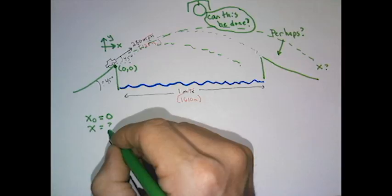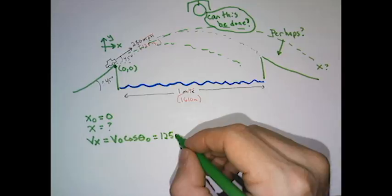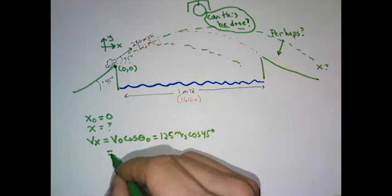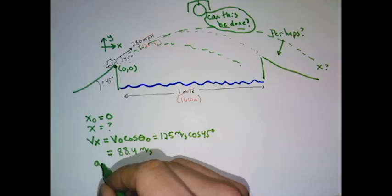His velocity in the x direction, I'm not given. I know he's launched at 125 meters per second, but only a piece or a component of that is in the x direction. So remember, we're using cosine for x. So we'll multiply 125 by the cosine of 45, and we'll find his launch velocity to be 88.4 meters per second horizontally. No acceleration in the x direction. He'll keep that velocity the entire time, assuming minimal or no air resistance.